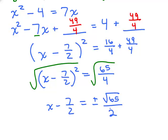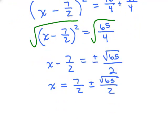Since I have a common denominator, it's going to be easy. I'm just going to add 7 halves to both sides, so I have 7 halves plus or minus the square root of 65 halves.